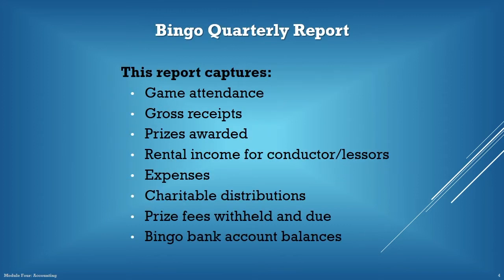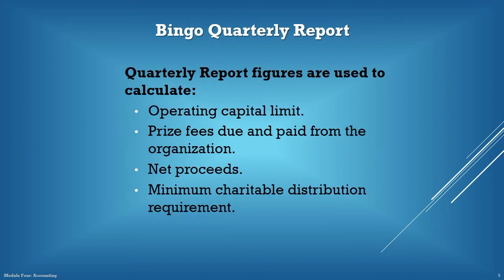The Bingo quarterly report captures the game attendance, gross receipts, prizes awarded, rental income if the organization is a conductor lessor, expenses, charitable distributions, prize fees withheld and due to the commission, and the Bingo bank account balances for each three-month period. Figures reported on the quarterly report are used to calculate operating capital, validate that each organization submitted the correct amount of prize fees, show net proceeds, and calculate the minimum charitable distribution requirement for the next quarter.